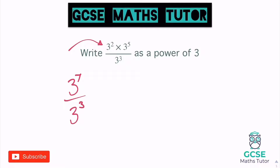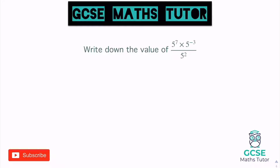But now we've tidied up the top, we can apply that second rule and subtract the powers. So seven take away three gives us three to the power of four as our final answer. Let's have a look at one more.